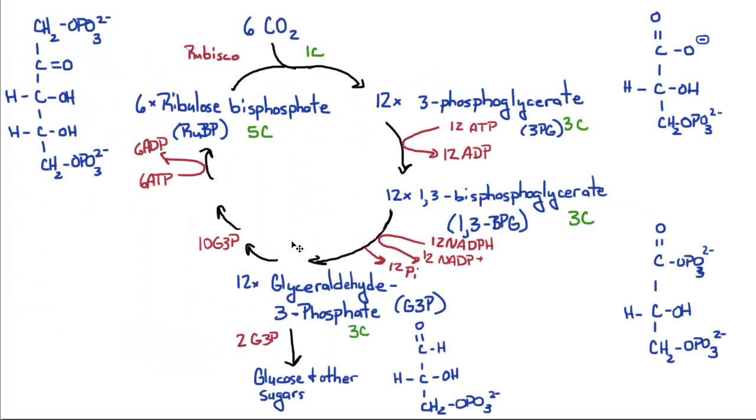Here's how the cycle works. You've got your six carbon dioxide, which is a one-carbon molecule, and you've got your six ribulose bisphosphate molecules,